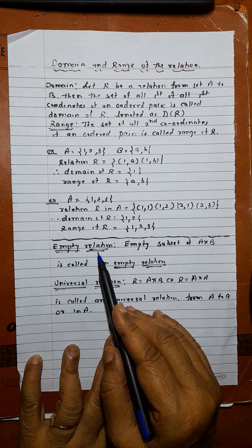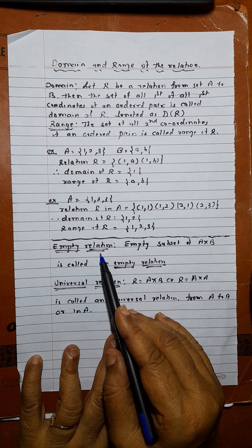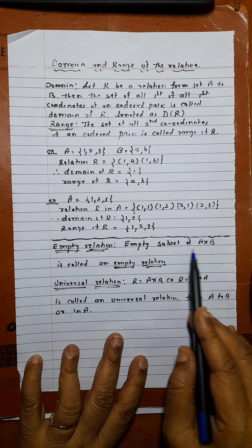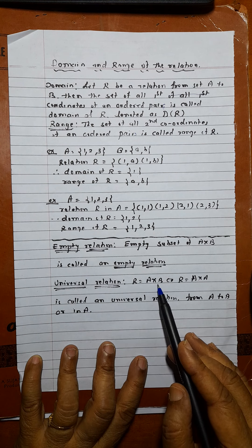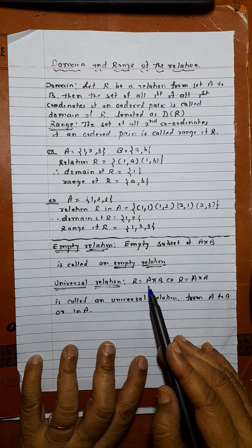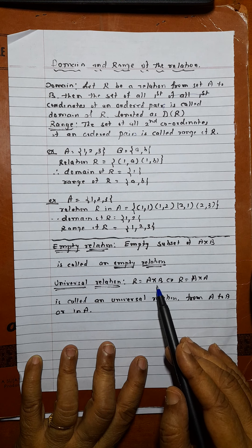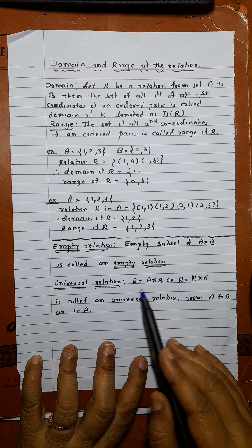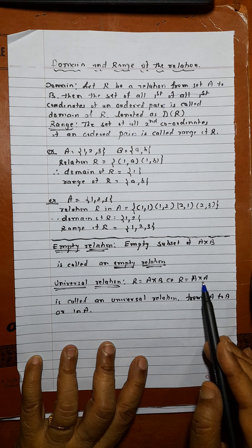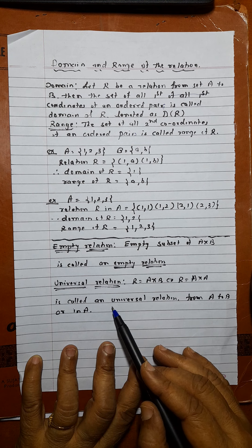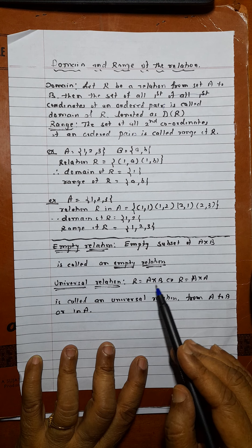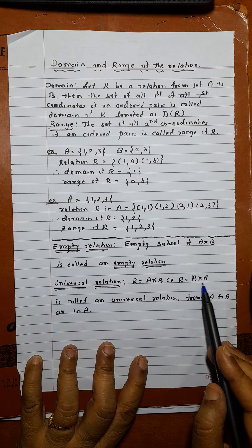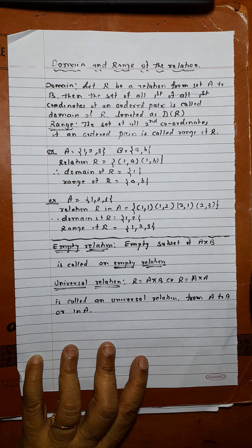Another definition: a relation is a subset of A cross B, and since the empty set is a subset of every set, the empty subset of A cross B is called the empty relation. The entire set A cross B is also a subset of itself, so that complete set of all ordered pairs is called the universal relation — from A to B, or in A if only one set is used. Next time I will start functions.